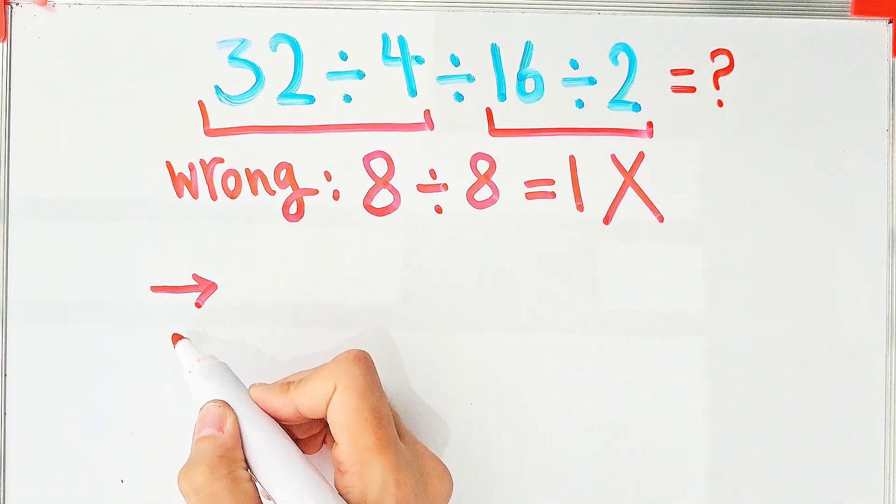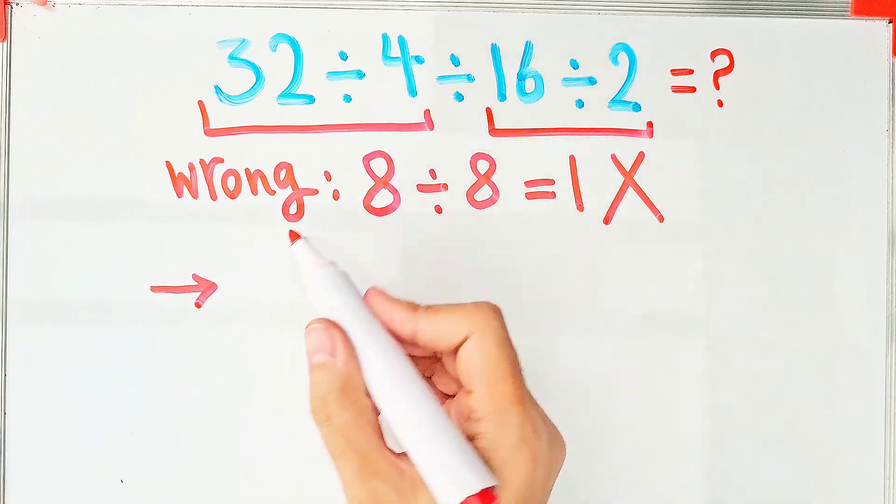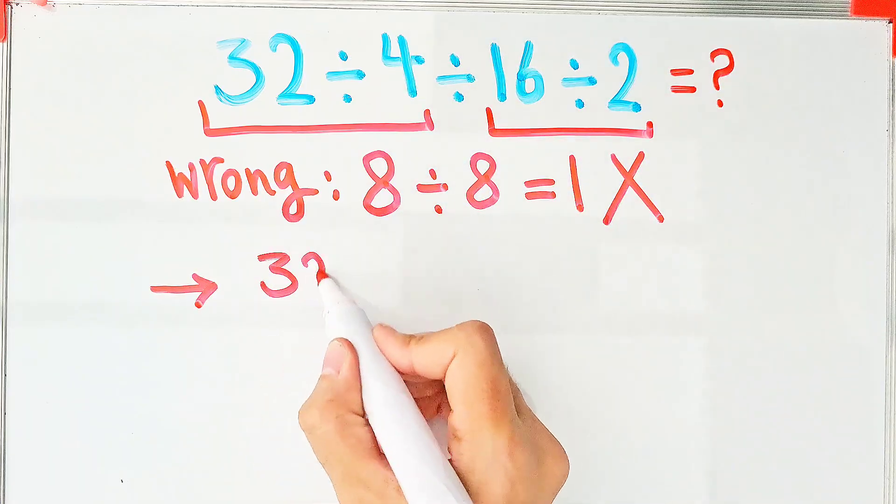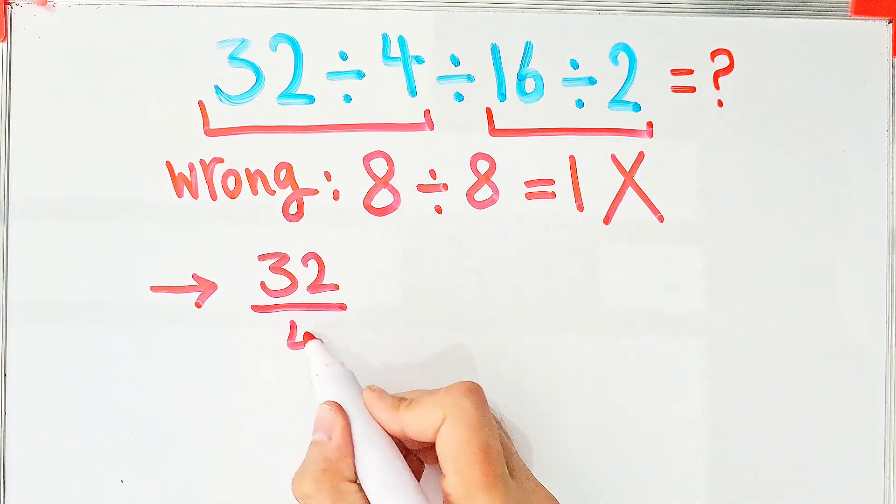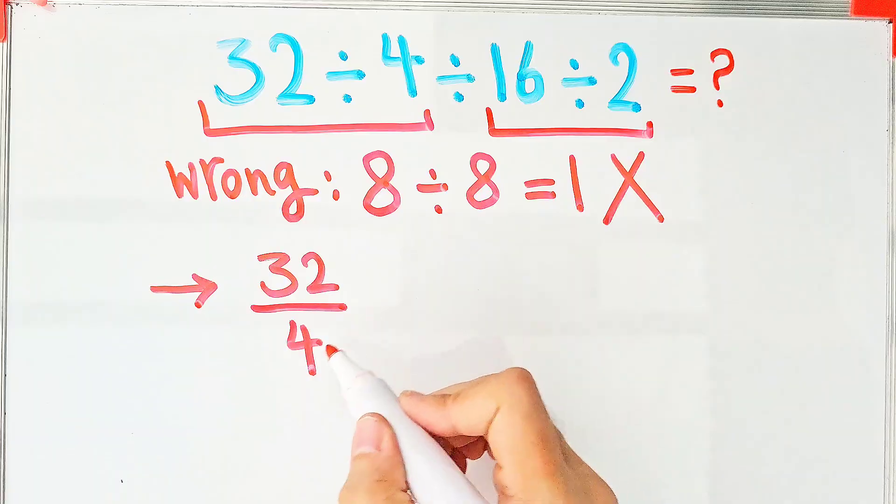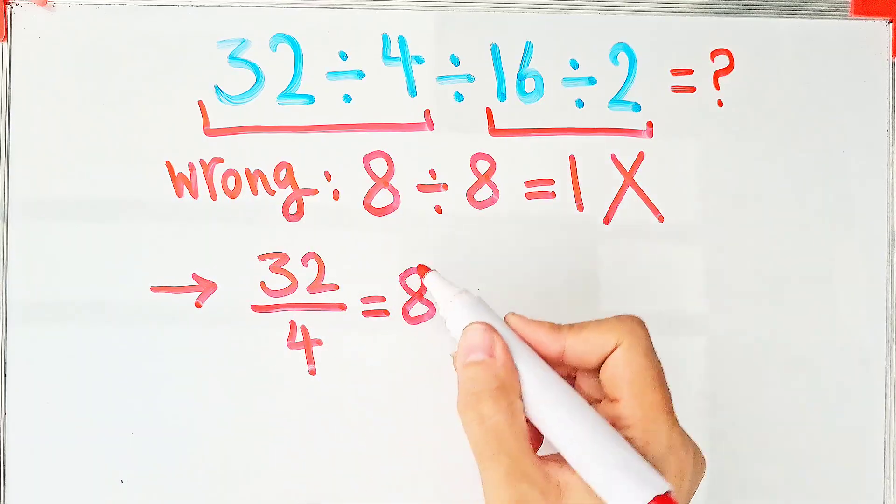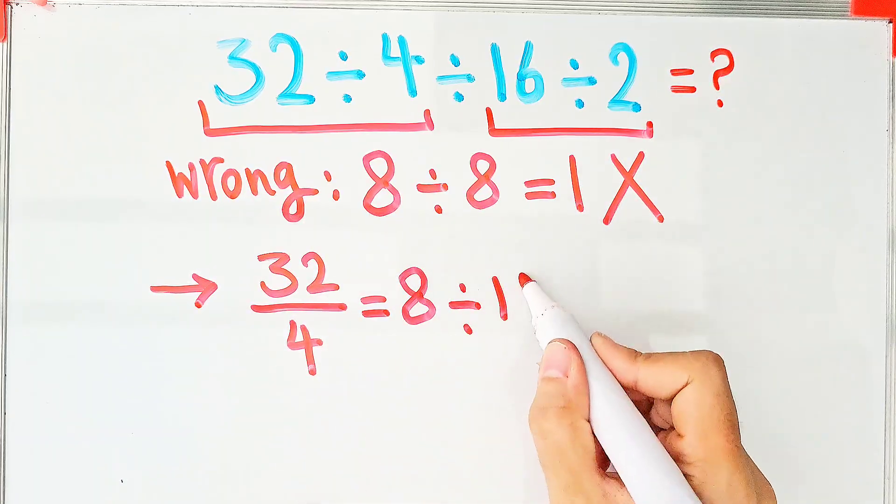Okay guys, we have 32 divided by 4, that equals 32 over 4. And the final answer of this part equals 8. We have 8 divided by 16, after that divided by 2.